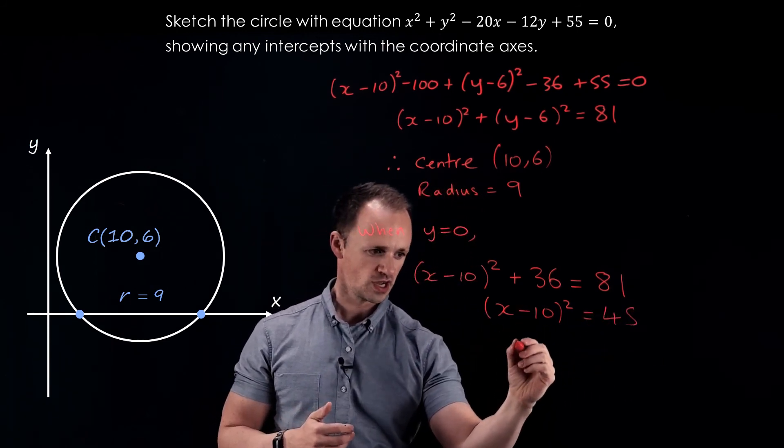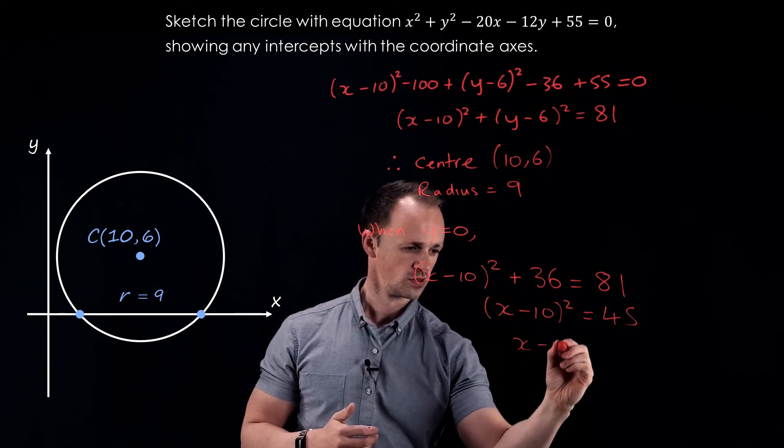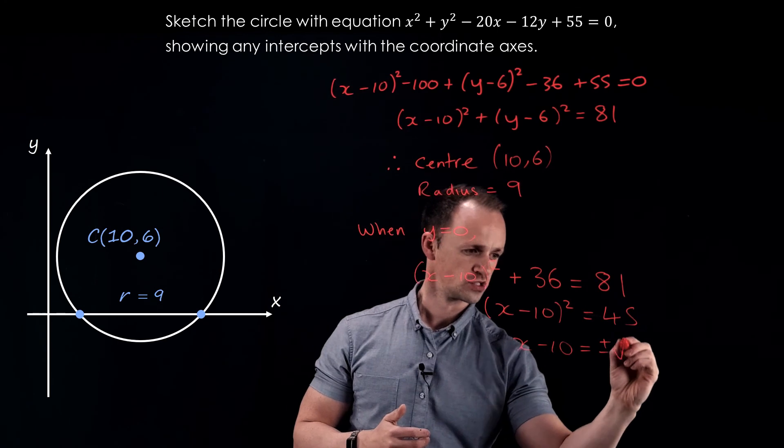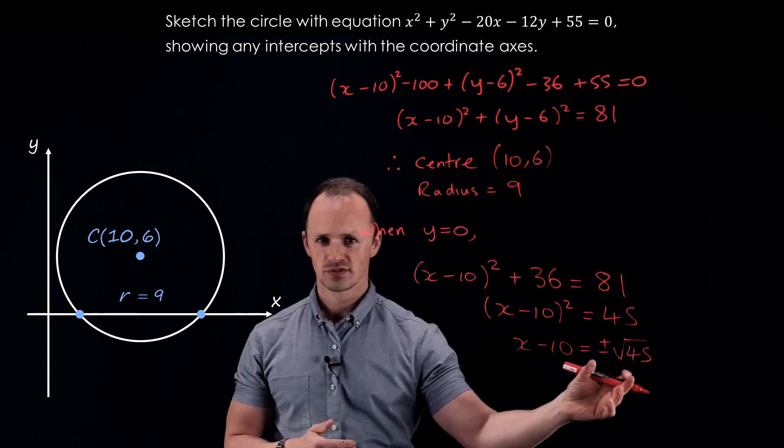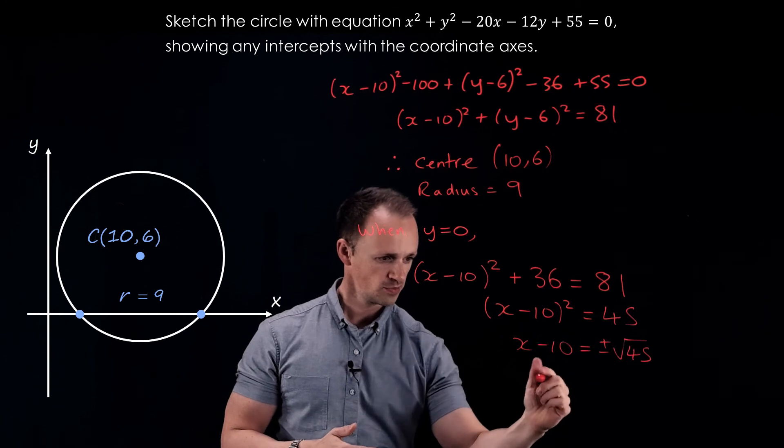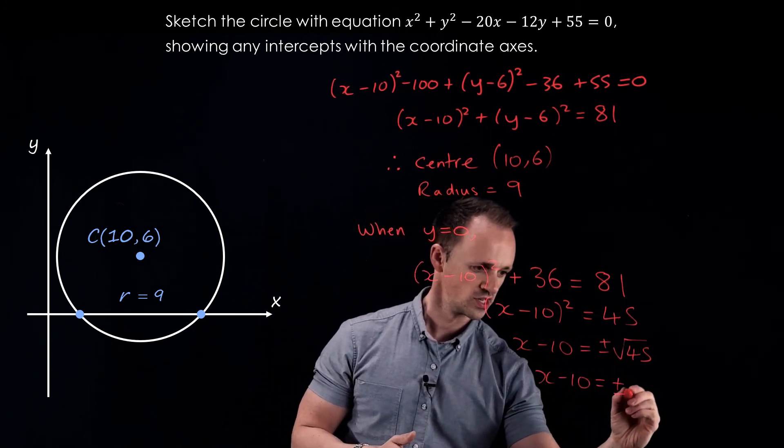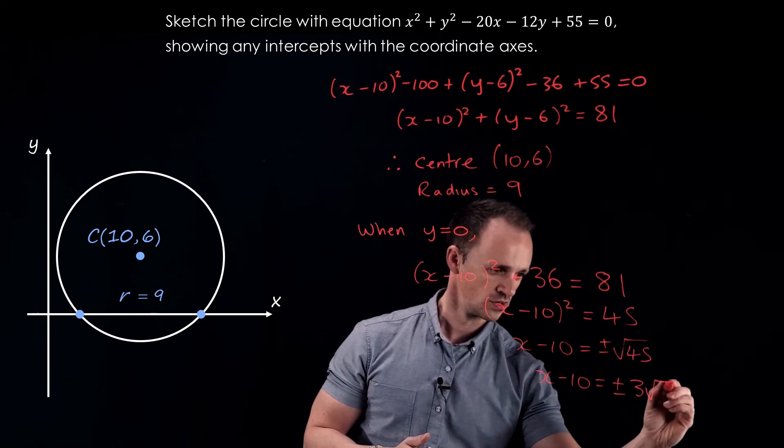Then I can square root both sides. It's going to give me plus or minus the square root of 45. Since 45 contains a square number, I'm going to simplify this third to get x minus 10 equals plus or minus 3 root 5.